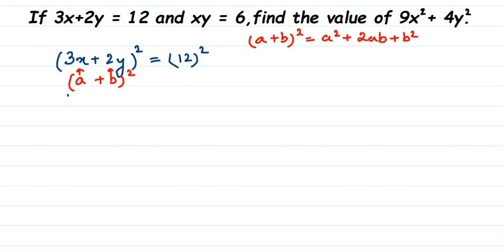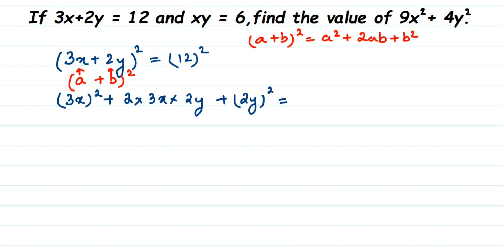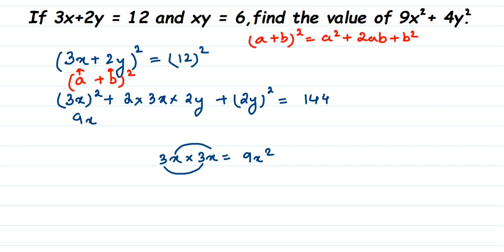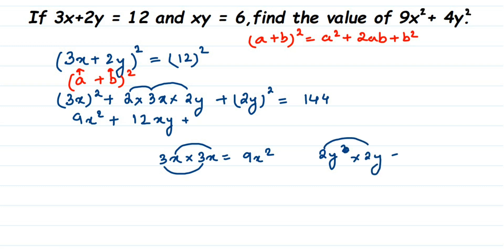Wherever you see a, put 3x; wherever you see b, put 2y. So in place of a squared it becomes 3x whole squared, plus 2 times a (which is 3x) times b (which is 2y), plus b squared which is 2y whole squared, all equal to 144. Opening the brackets: 3x squared gives 9x squared; the middle term gives 2 times 3 times 2 equals 12, so 12xy; and 2y squared gives 4y squared.